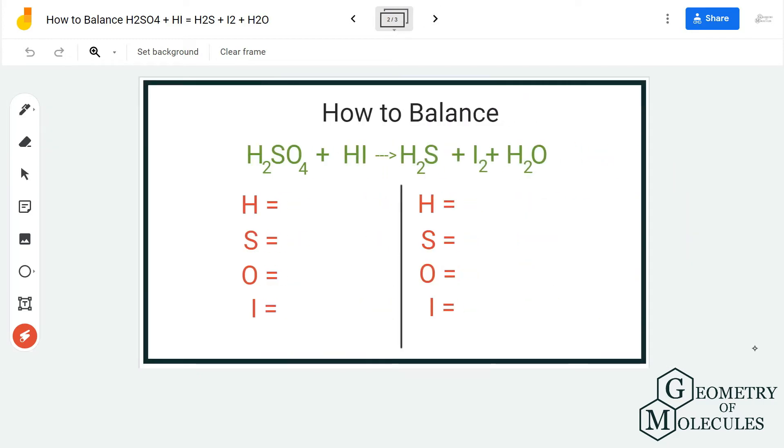To start with balancing this equation, it is important to know what kind of equation it is. This is basically a redox type of equation. You can check out our other videos to see how we balance other equations as well. For now, we are first going to count the number of atoms on each side of this equation.